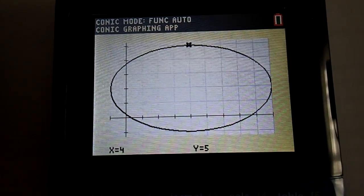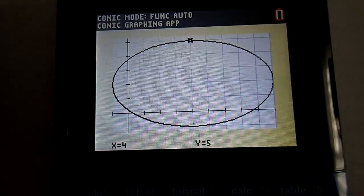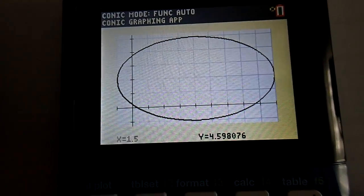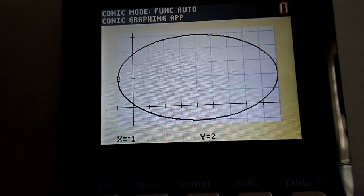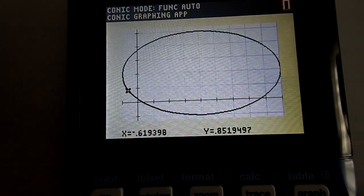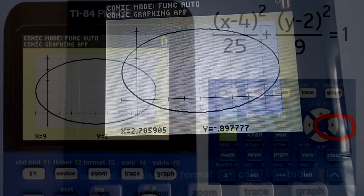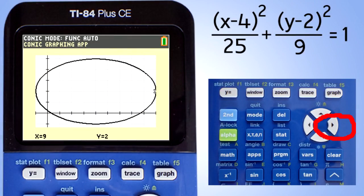This is useful to find the coordinates of the vertexes and co-vertexes of the ellipse. As you trace around the ellipse, the X and Y coordinates appear at the bottom of the screen.